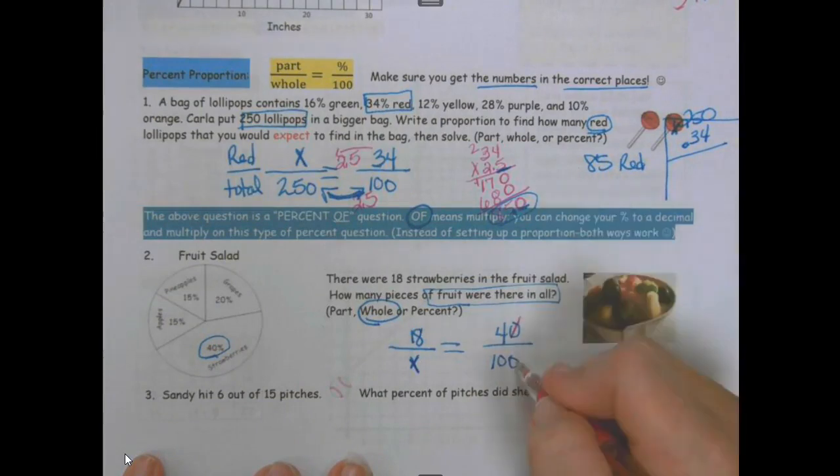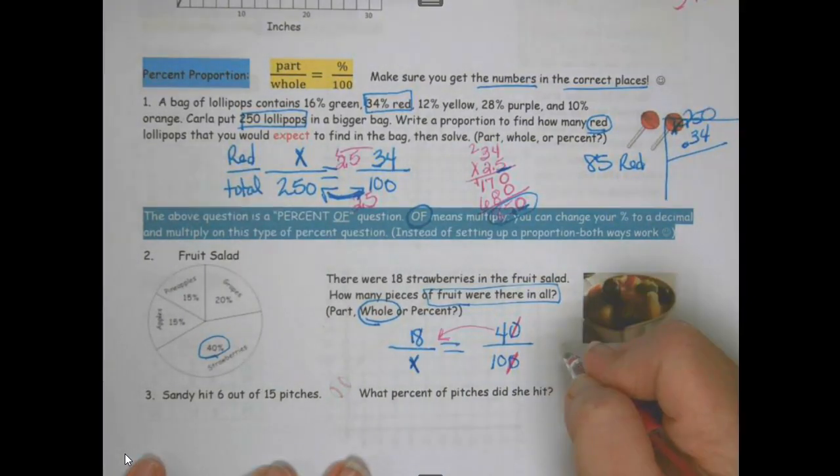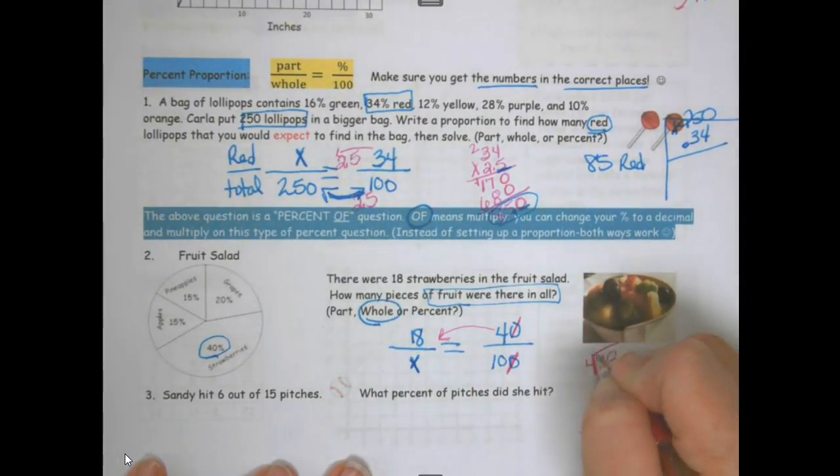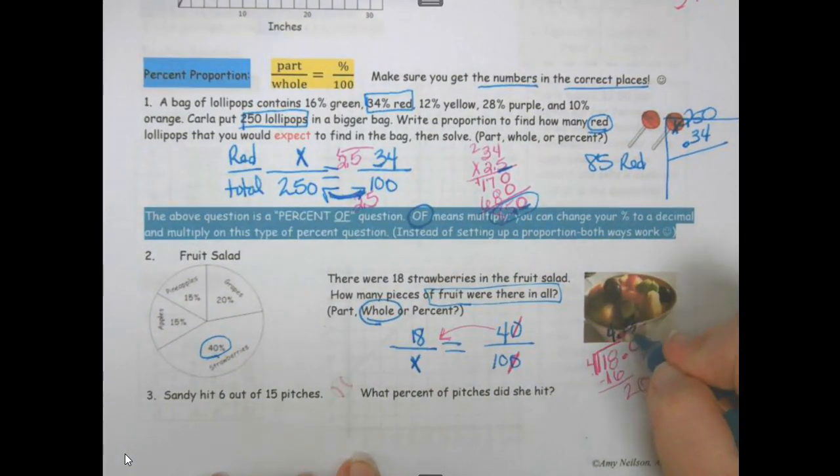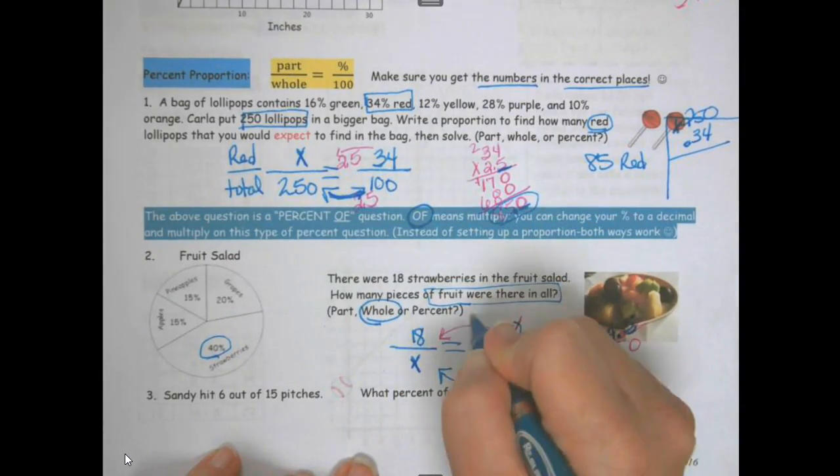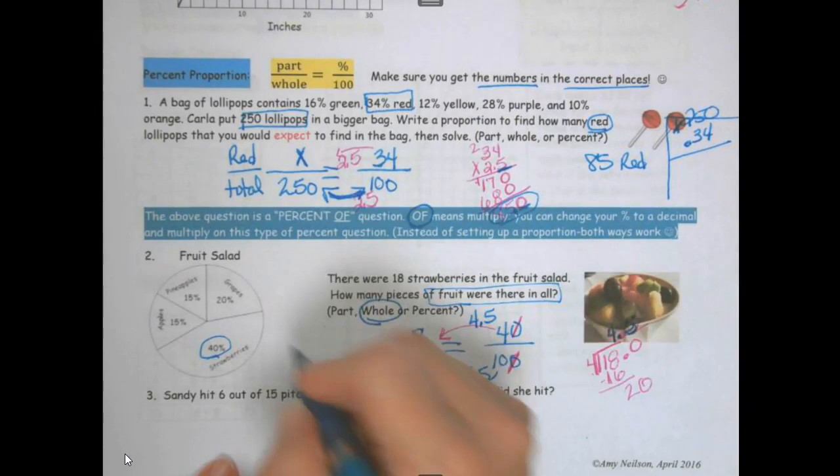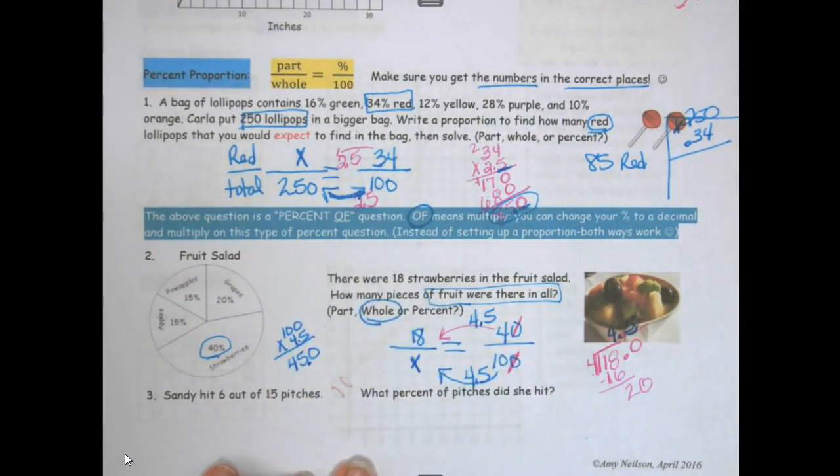So we were looking for the whole. You can simplify this by cutting off your zeros dividing by 10. Now can 4 go into 18? Yes you would do 18 divided by 4. 4 goes into 18 4 times. Add your decimal, add your zero, bring it down. So 4.5. So I am going to multiply this way by 4.5. 100 times 4.5 is 450. So there was 45 strawberries.